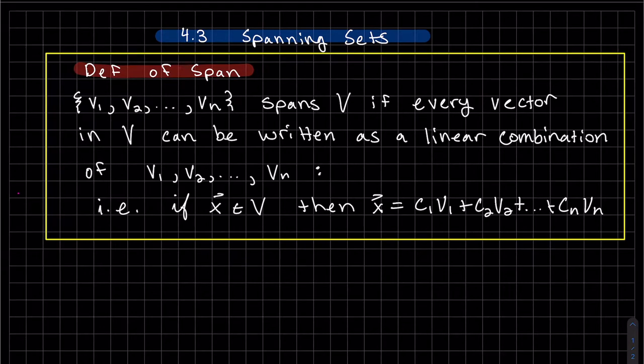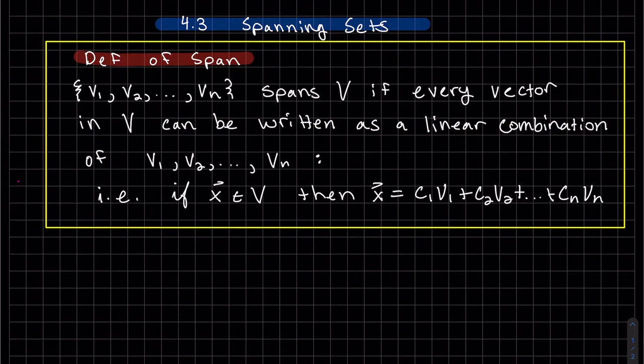So the definition of span. This set of vectors spans V if every single vector in the vector space V can be written as a linear combination of these vectors. That is, if we have any vector—meaning every vector, a random vector in V—then that vector, which represents all the vectors, can be written as a linear combination of those original vectors V's.